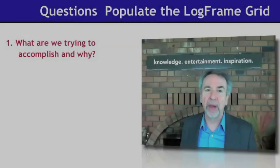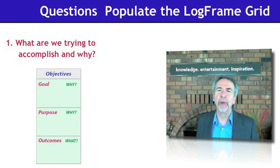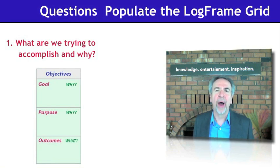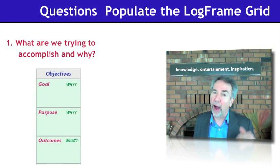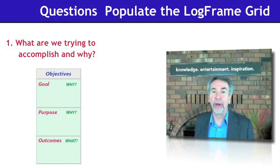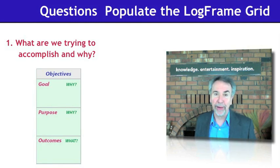The first question we'll ask is: what are we trying to accomplish and why? We're trying to accomplish objectives, and we will arrange those objectives into a hierarchy of outcomes — specific deliverables — and if outcomes, then purpose, a higher level objective, if purpose, then goal. Because every project has multiple objectives.